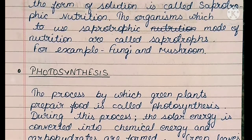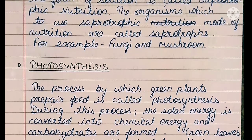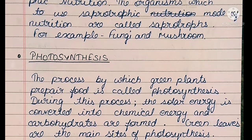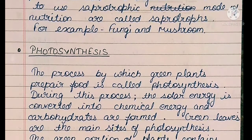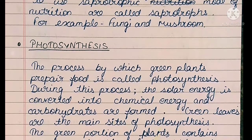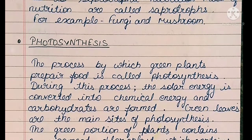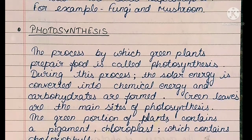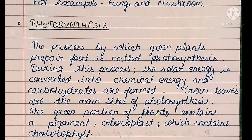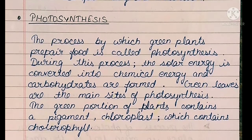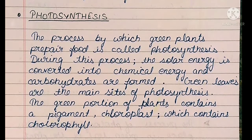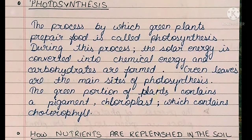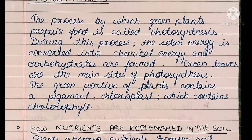Photosynthesis: The process by which green plants prepare their food is called photosynthesis. During this process, solar energy is converted into chemical energy and carbohydrates are formed. Green leaves are the main site of photosynthesis. The green portion of the plant contains a pigment called chloroplast, which contains chlorophyll.